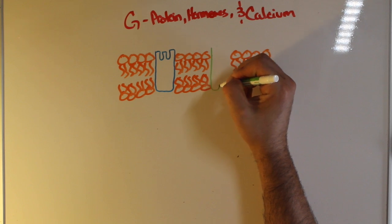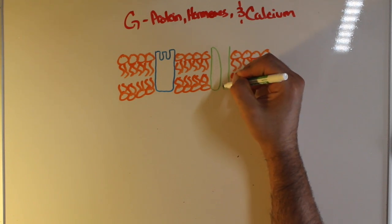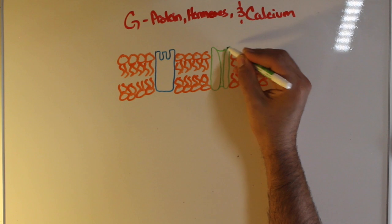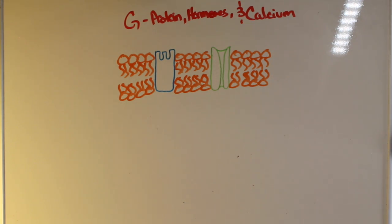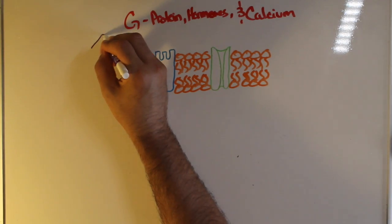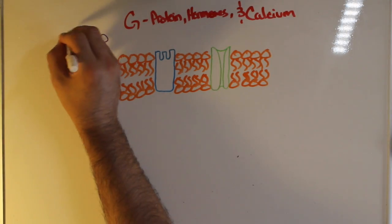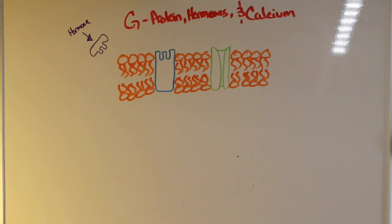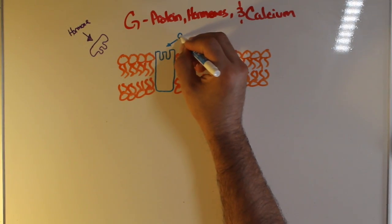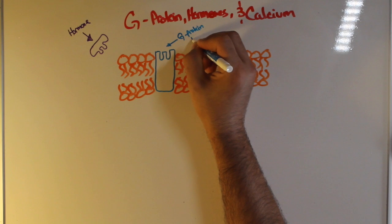Now because we're talking about calcium being the secondary messenger, we're going to go ahead and draw the calcium ion channel. Now the hormone will fit into the G receptor, which is why it's drawn like so. Think of it as like the lock and key method of enzymatic activity.